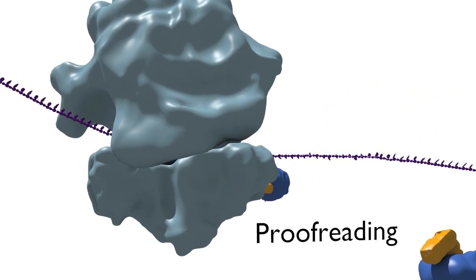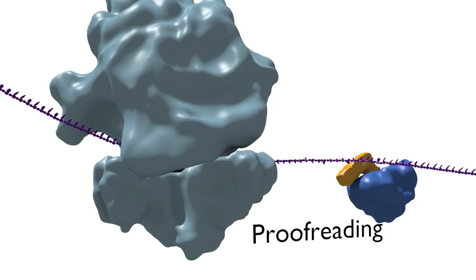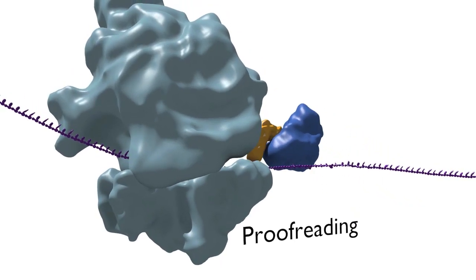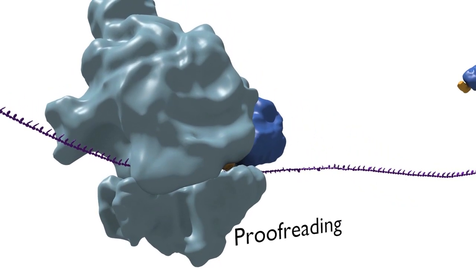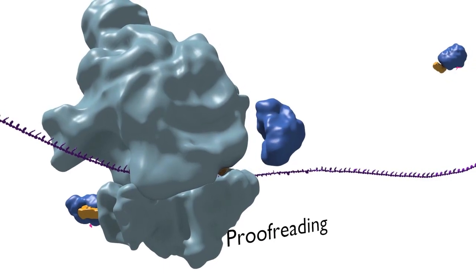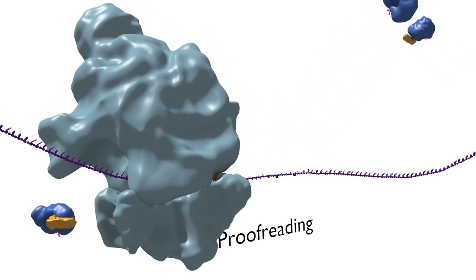In both steps, thermodynamic and kinetic mechanisms are used by the ribosome to aid in discrimination, such that the system chooses, with extremely high fidelity, the cognate tRNA from the 30 or 40 tRNAs in the cell.